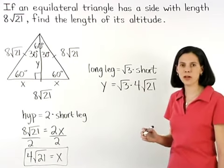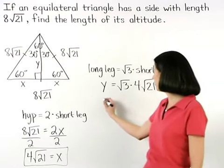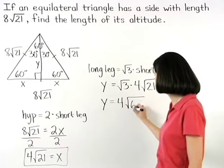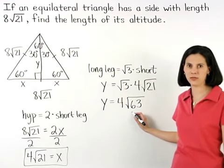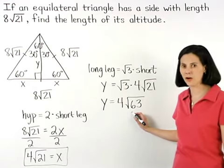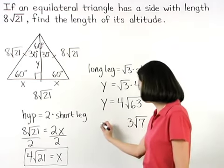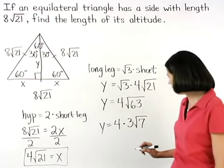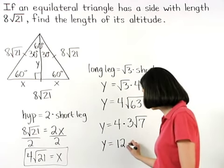Now, multiplying the numbers inside the radicals together gives us y equals 4 root 63. And notice that the square root of 63 can be broken down to 3 root 7. So we have y equals 4 times 3 root 7, or y equals 12 root 7.